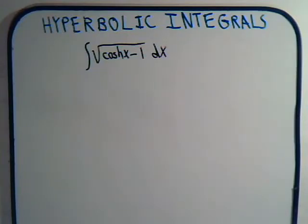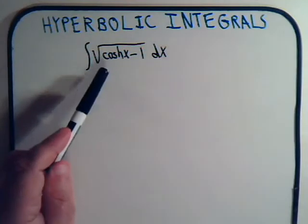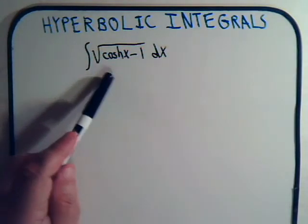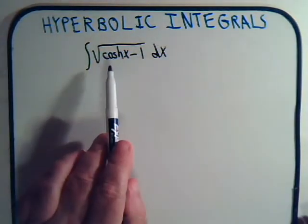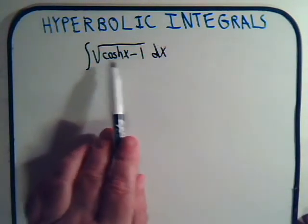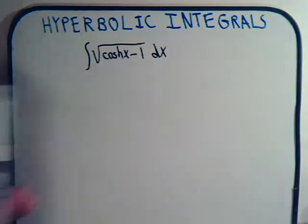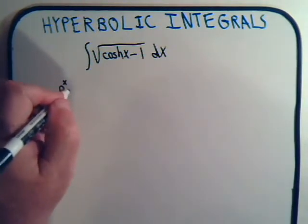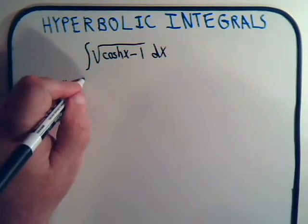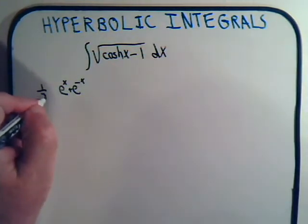Here we have the integral of the square root of the hyperbolic cosine of x minus 1. The only apparent choice is to express this in its exponential form and subtract 1 from it to see where that leads us. Working with what's inside the square root sign, the hyperbolic cosine of x is e to the x plus e to the minus x, times one half.